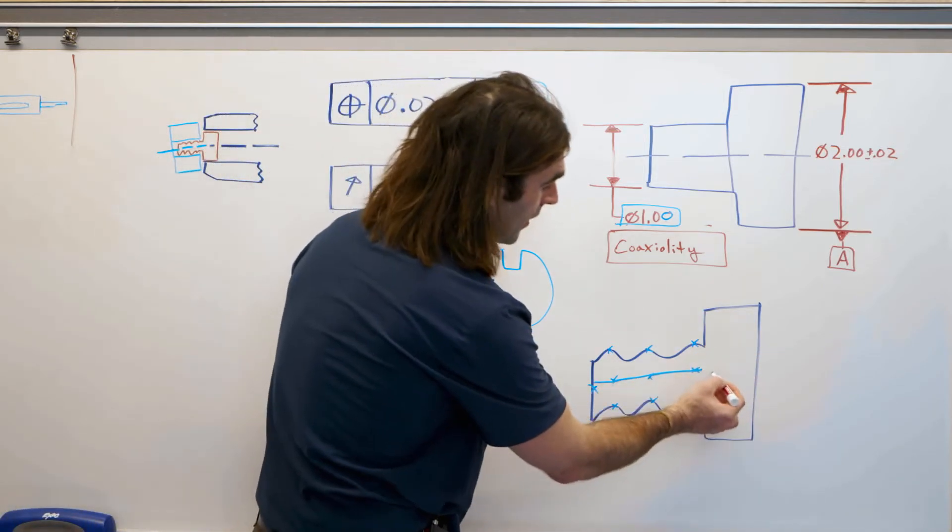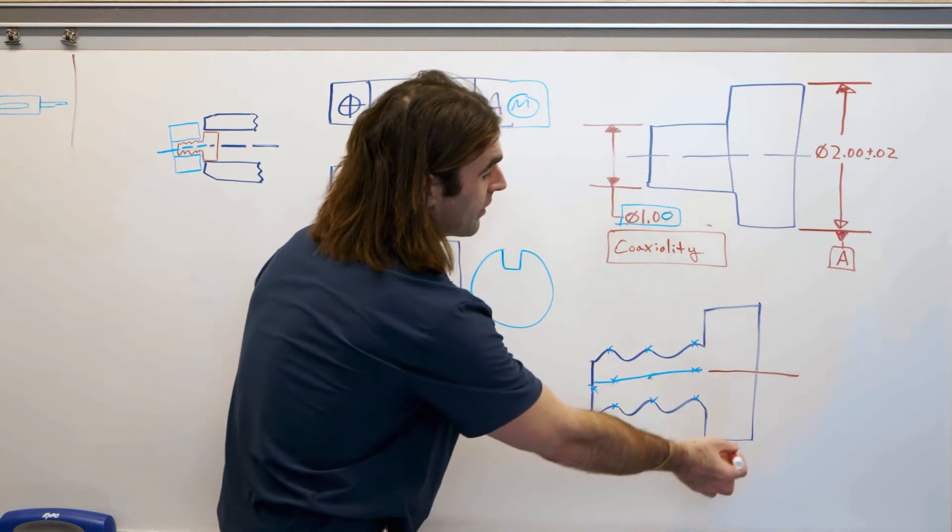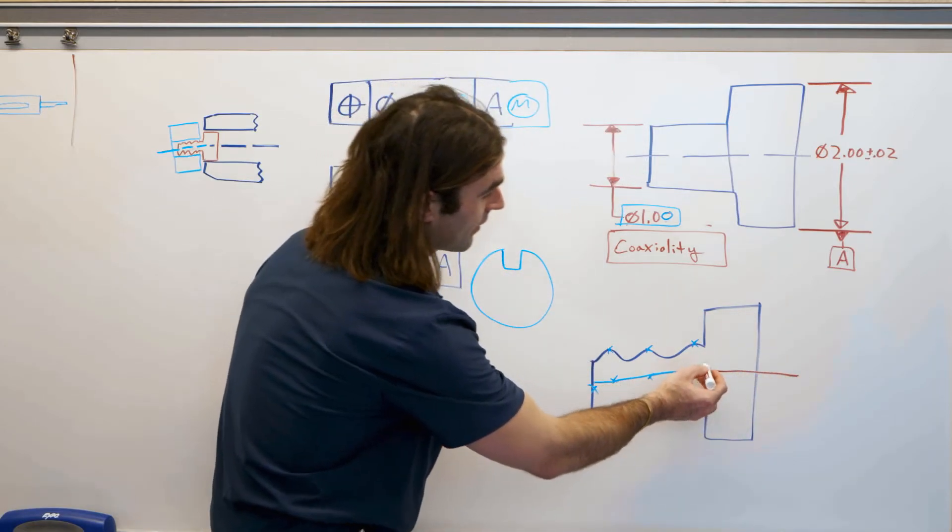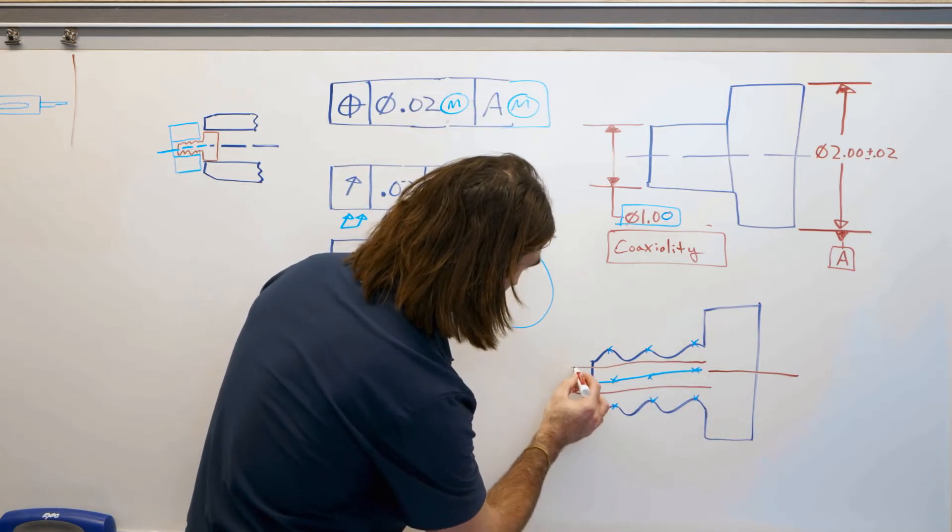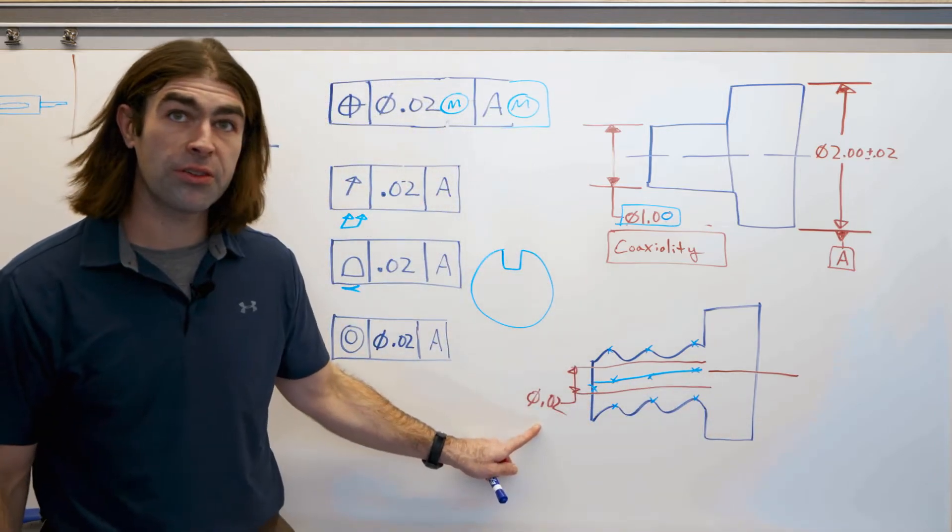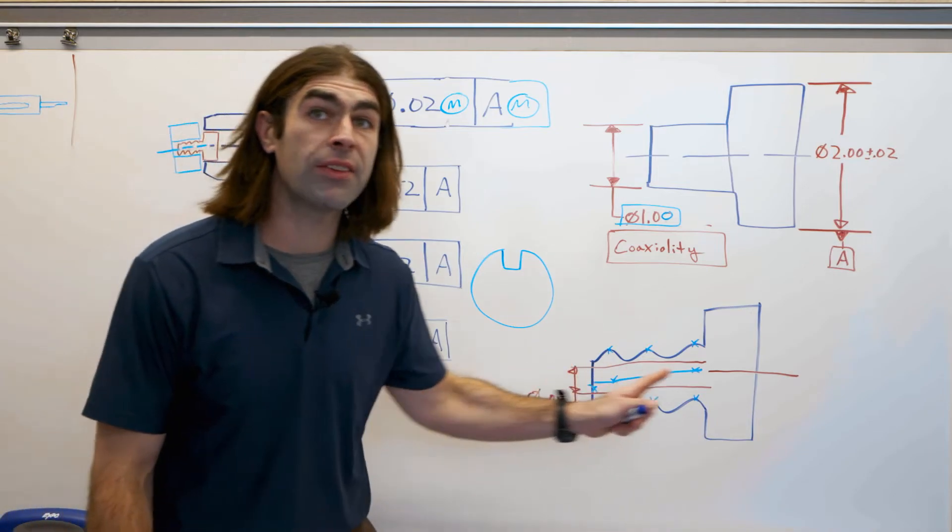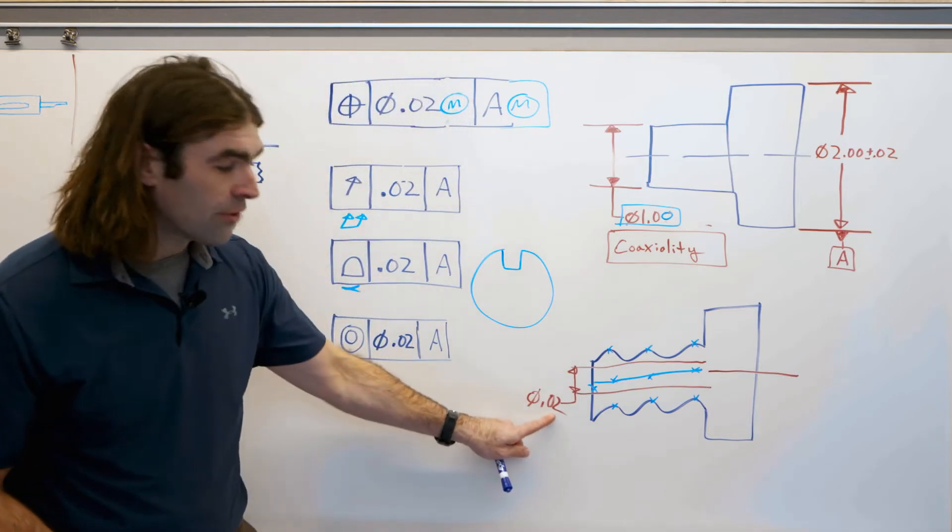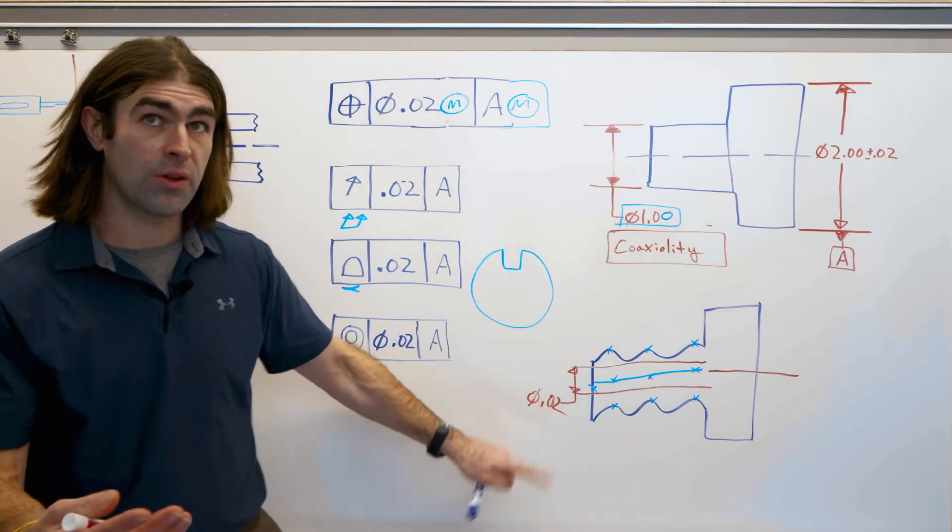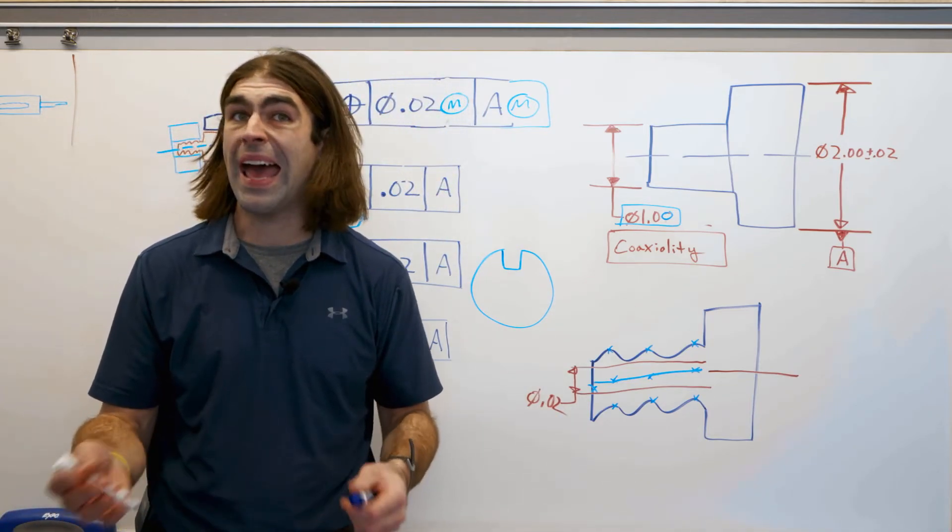So we're going to come from our datum axis here. This is datum A, say this is our axis. We'll have a tolerance zone. The tolerance zone is located, it's coaxial with the datum axis, and all of the derived median points need to fall within this 20 thousandths for the concentricity tolerance to pass.